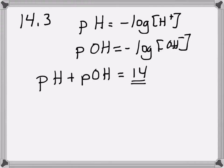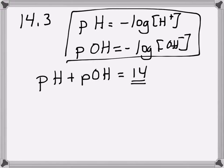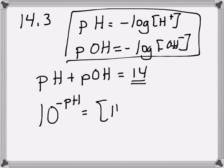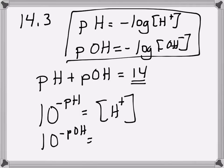That relationship will come in handy. If you want to go backwards and use the inverse: 10 to the negative pH gives you the hydrogen concentration, and 10 to the negative pOH gives you the hydroxide concentration. So you can go back and forth between them — if you're given one, you should be able to figure out the others.